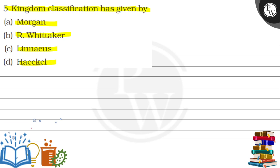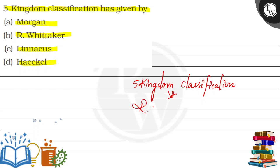Five Kingdom Classification is the classification which we follow today. This is the most advanced classification which we have to follow. This has been given to us by R.H. Whittaker.